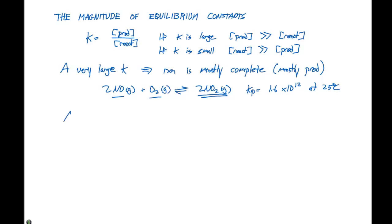If we have a very small K, that means the reaction does not proceed forward readily.